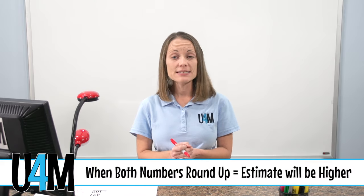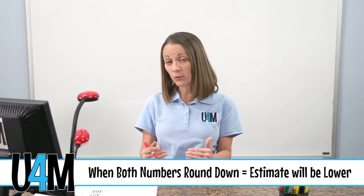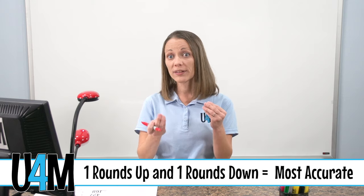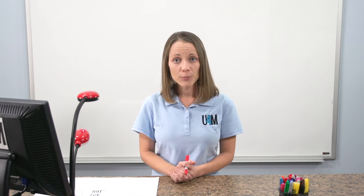Remember that when you're finding estimates, if you're rounding both of those numbers up, that your estimate's going to be a little high. And if you're rounding both the numbers down, that estimate's going to be a little low. If you have one that goes up and one that goes down, like we did in that first example, you're going to see one that's pretty close to the actual answer. So let's take a look at another problem.